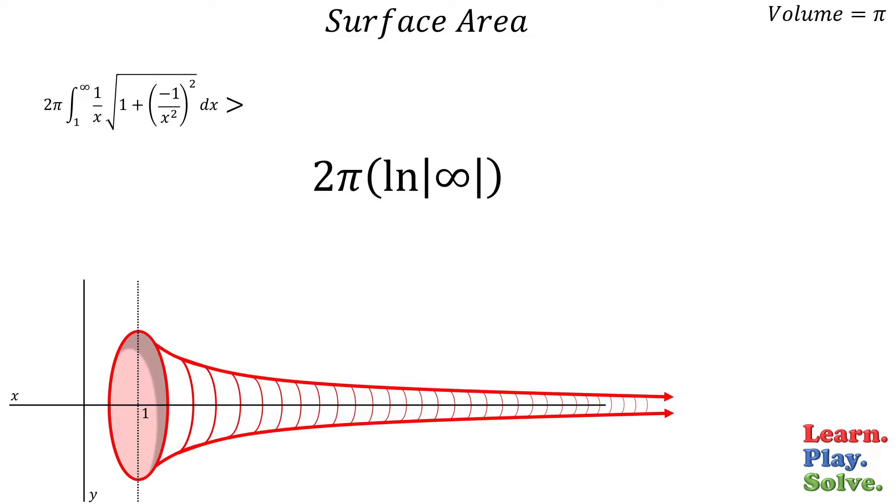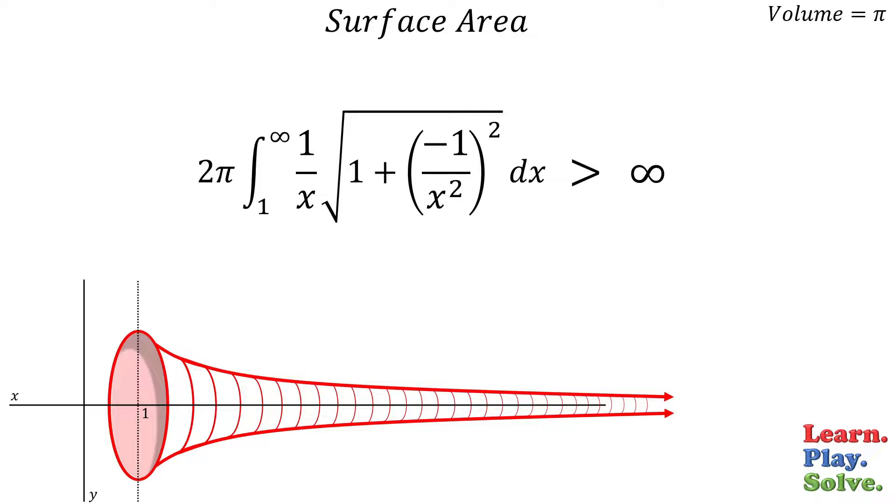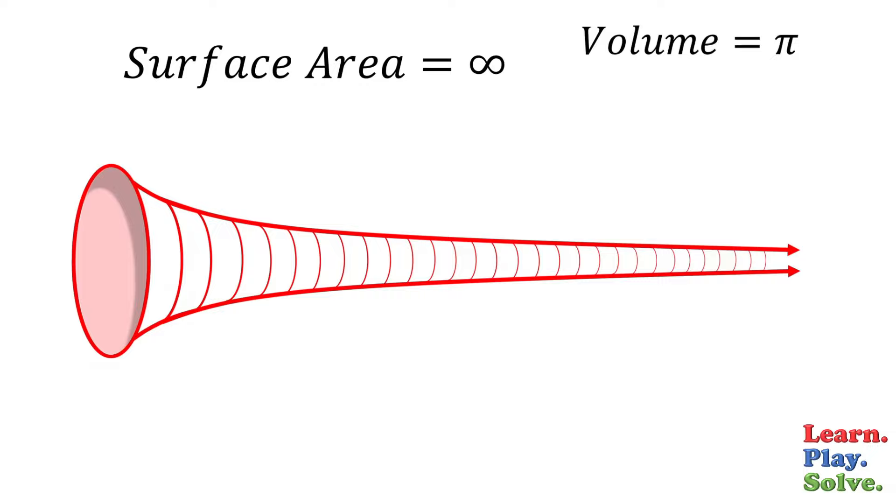So if this integral diverges, and the original one is even larger, then it must also diverge. So the surface area of Gabriel's horn has no limit. And yet, its volume is finite. But how can this be?